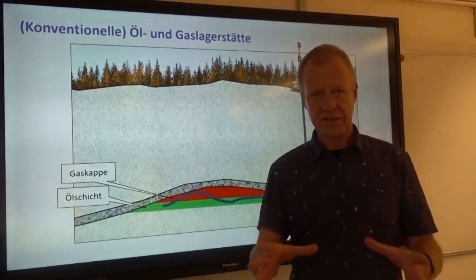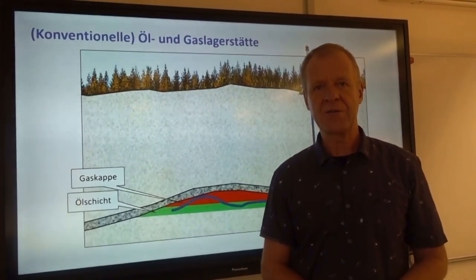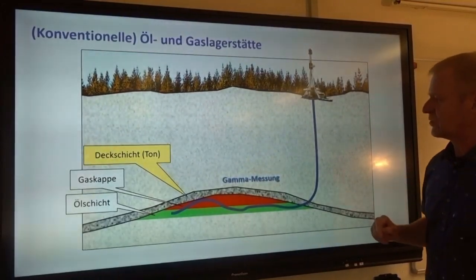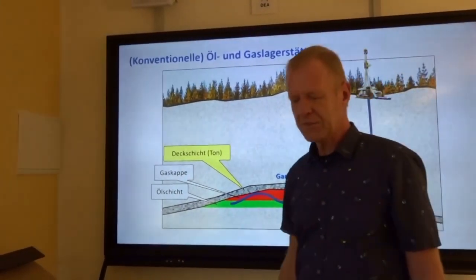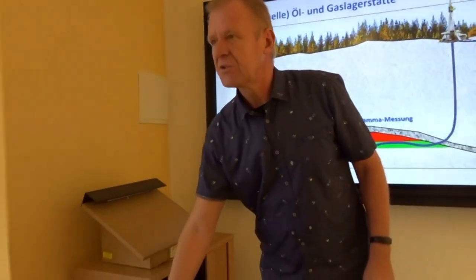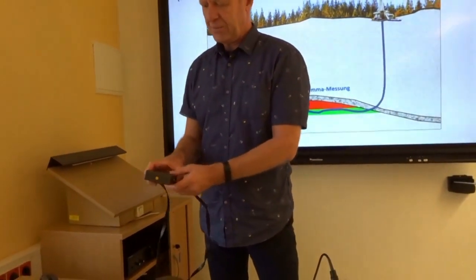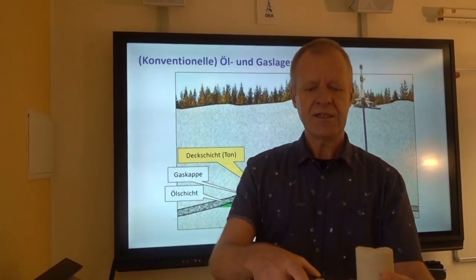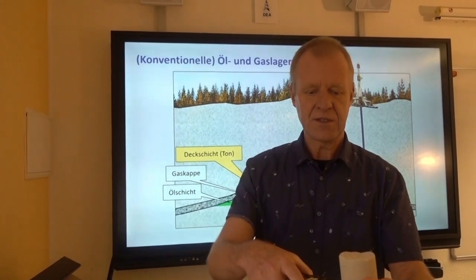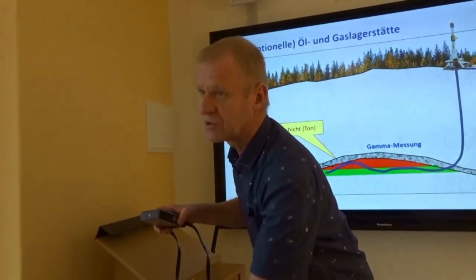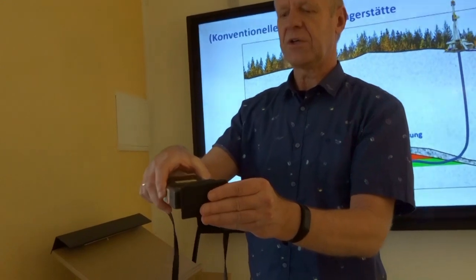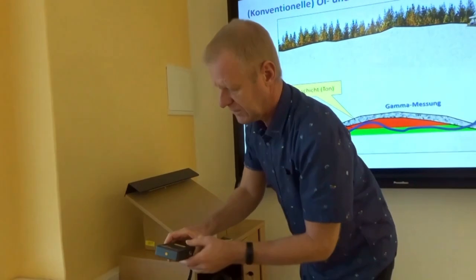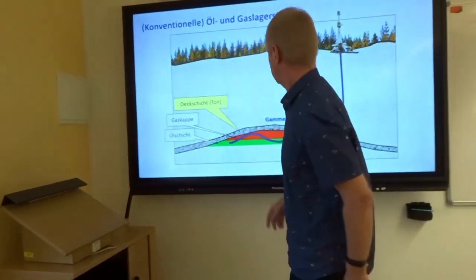For this purpose our bottom hole assembly contains a few sensors, which we now want to explain. The first sensor is a so-called gamma sensor, and with a gamma sensor you can measure the natural radioactivity of the rock. I have such a sensor here. The fact is that sandstone is not radioactive, but the top layer of clay is a little bit radioactive, as you can hear beautifully here. And so our gamma sensor reacts to this clay.